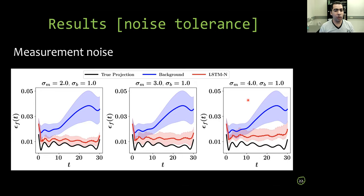Here we change the level of measurement noise with σ_m equal to 2, 3, and 4. And we find that the LSTM nudging is quite more sensitive to measurement noise than initial condition perturbation, but still able to give good results.